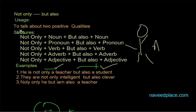So here we are saying that not only is he a teacher, but also a student. The same pattern applies: they are not only intelligent but also clever. We are saying they are intelligent but also clever as well.